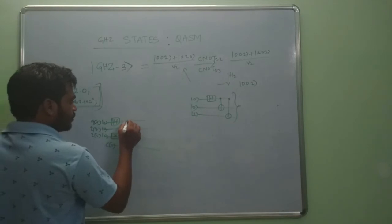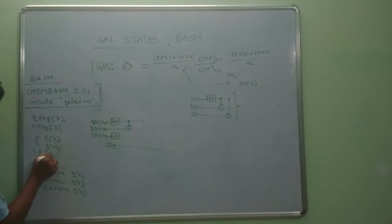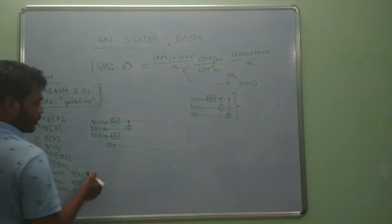Then C-NOT gate from q0 to q1. So CX from q0 to q1. Then CX q0 comma q2.